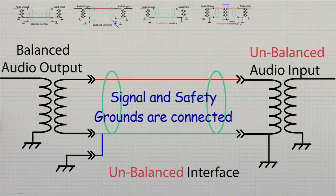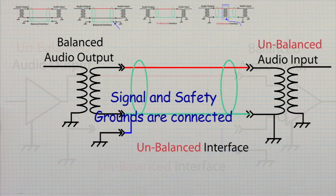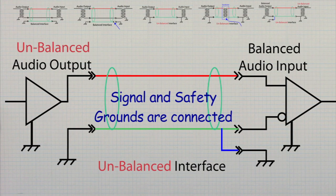Of course, when adapting from a balanced output to an unbalanced input or from an unbalanced output to a balanced input, the grounds will be connected unless an isolating transformer is used.